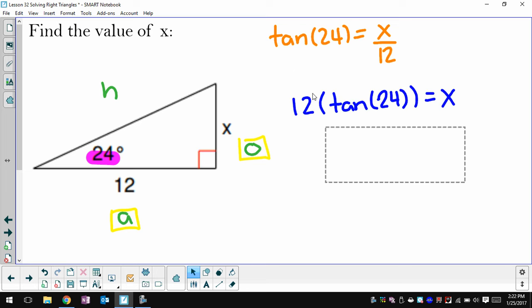I multiply both sides by 12. And now I can just do 12 times tangent of 24 to get x to be close to 5.34.